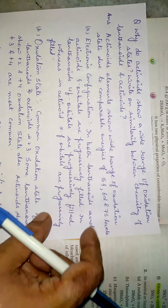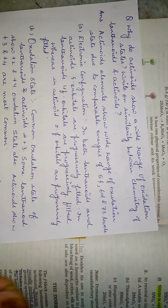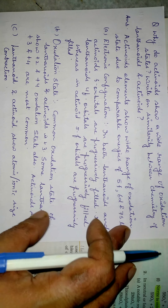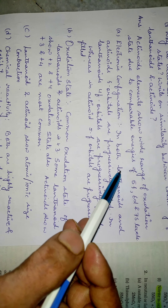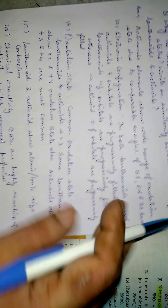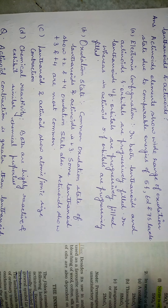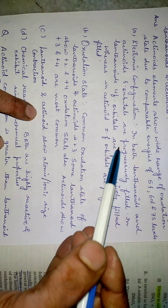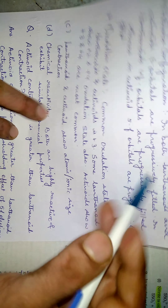Next: why do actinoids show a wide range of oxidation states? Actinoid elements show a wide range of oxidation states due to the comparable energies of the 5f, 6d, and 7s subshells. Regarding similarities between lanthanoids and actinoids: in both series, f orbitals are progressively filled - in lanthanoids, the 4f orbitals are progressively filled, whereas in actinoids, the 5f orbitals are progressively filled.